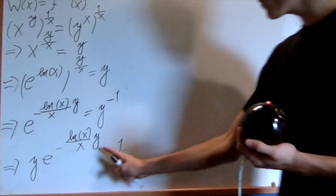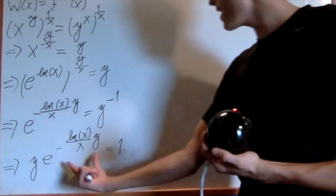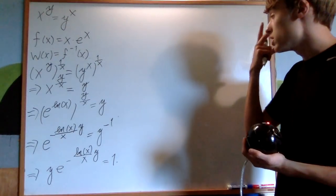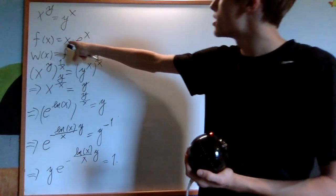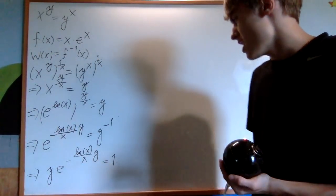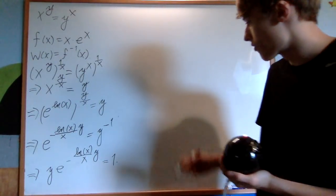You see, here we have a y. Here we have a y. The only difference is that there's a negative natural log of x over x in the top. So, the way I can get it in something times e to the something, where these are both the same thing, is just by multiplying both sides by negative natural log of x over x.